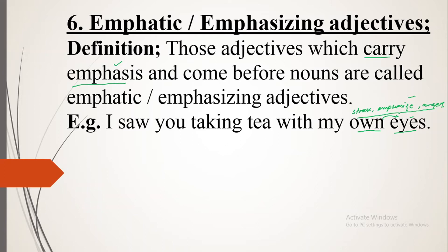What is intonation? Intonation is a mood — we will discuss it in coming lectures. It means expressing a word according to its usage. If I say 'I saw you taking tea with my own eyes' while laughing and with a fall of pitch, it does not mean the same thing. I have to say it with a rise of pitch and with an emotional, angry tone. So 'own' is your emphatic and emphasizing adjective, coming before the noun and showing angerness.